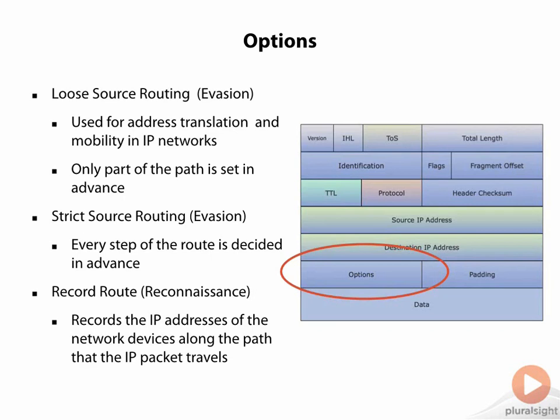There's also the record route option, which is used for reconnaissance attacks. It actually records the IP address of the devices along the path while it travels — so it tracks the path that we take. This is used for recon, and not necessarily something that we want to have happening.